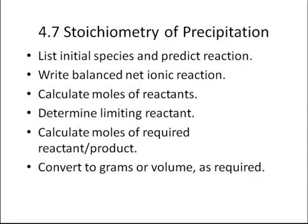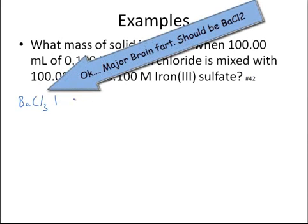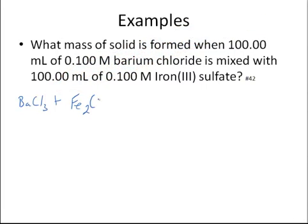Let's look at an example and try one. We've got this problem and the first thing I've got to do is write out this reaction. I've got barium chloride, BaCl2, plus iron(III) sulfate, Fe2(SO4)3.